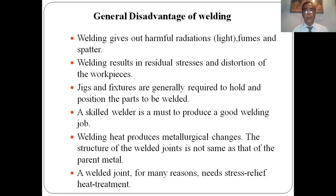General disadvantages of welding: welding gives out harmful radiations — exchange lights, ultraviolet rays, fumes, and spatters. Welding results in residual stresses and distortion of work pieces due to heat. Jigs and fixtures are generally required to hold and position the parts to be welded. A skilled welder is a must to produce good welding joints. Welding heat produces metallurgical changes — the structure of the welding joint is not the same as that of the parent metals. A welding joint, for many reasons, needs stress relief heat treatment.